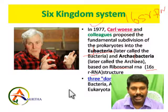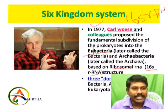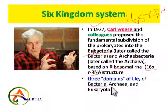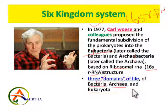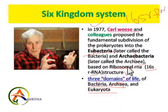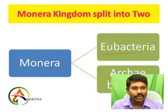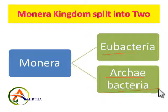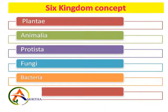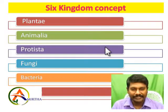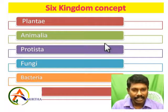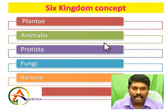He proposed the six kingdoms along with the three domain concept. The three domains mentioned are: Bacteria, Archaea (RK bacteria), and Eukaryota. So bacteria, Archaebacteria, and eukaryotic organisms — these are the three domains of life. In the six kingdom concept, he split the Monera kingdom into two: Eubacteria and Archaebacteria — the old bacteria resistant to various hyper and hypo conditions, extreme environments.